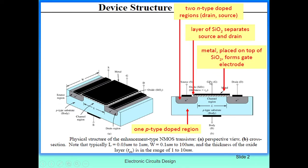Here you can see the gate terminal. Below the gate terminal you can see the SiO2 layer — this is called silicon oxide or insulator. These are the source and drain regions. We have two N-type doped regions: this is the source and this is the drain. Because this is an N-type MOSFET, source and drain are both N-type doped regions. This is the layer of SiO2 silicon oxide which separates the source and the drain terminals.